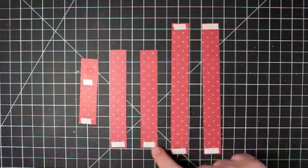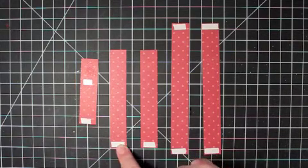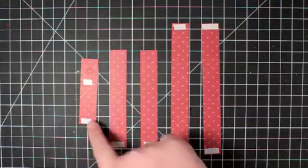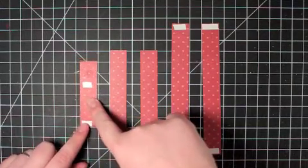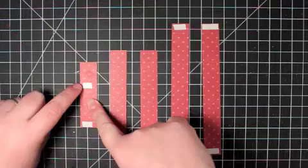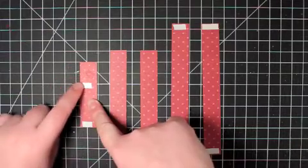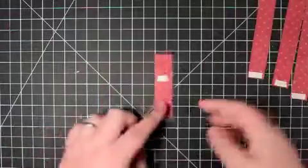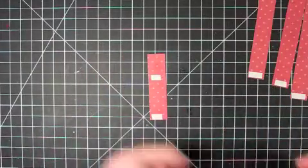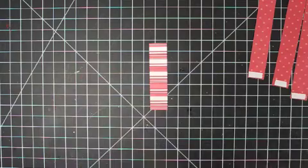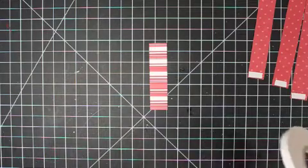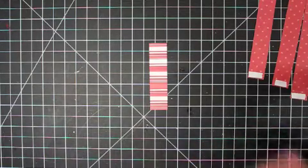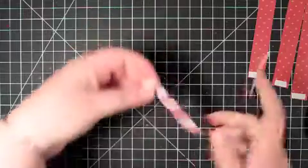On your middle size strip you're just going to put a little strip on one end and then on your smallest strip you're going to put a strip at the bottom and then you're going to put a strip approximately one inch down from the top. And now this strip is a little bit different because you're actually going to put the adhesive in the exact same places on the front as well as the back.